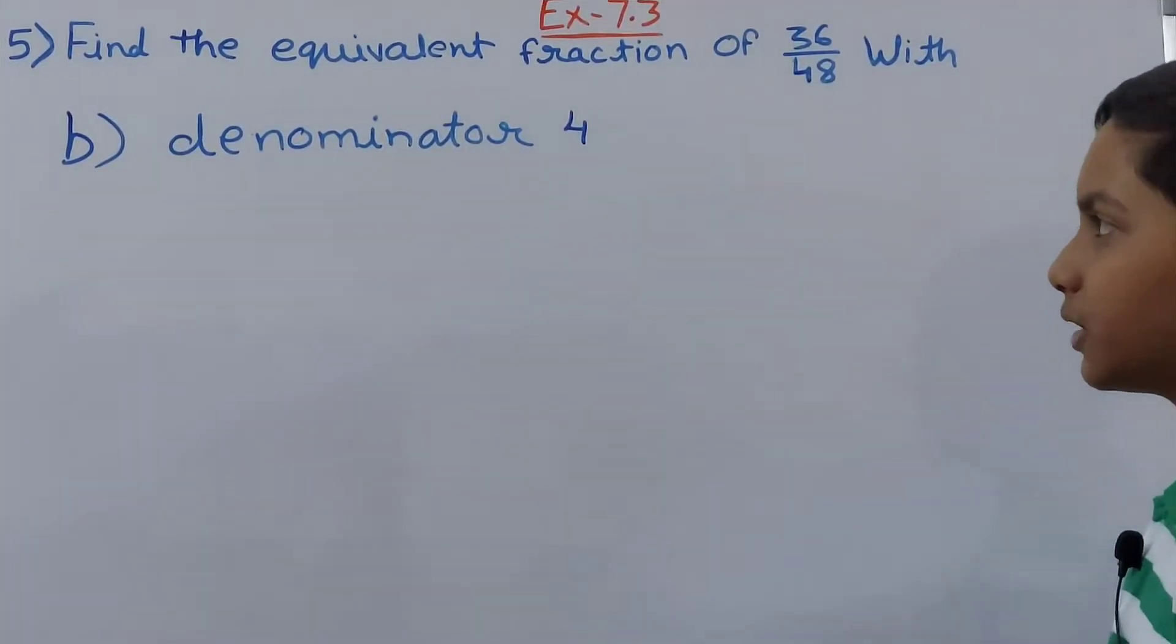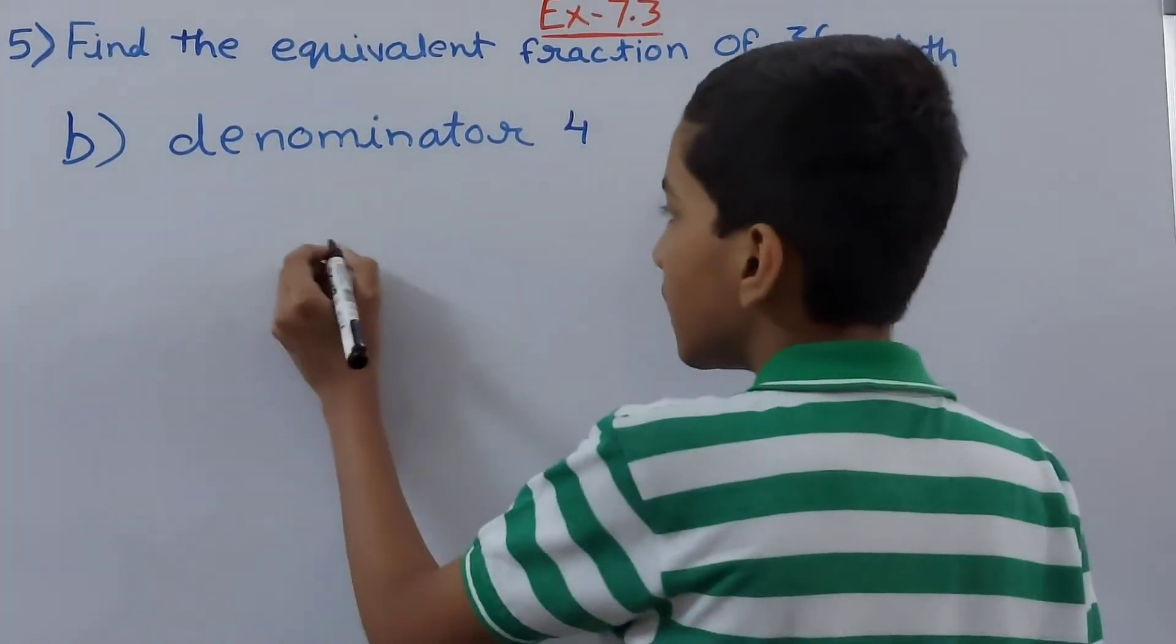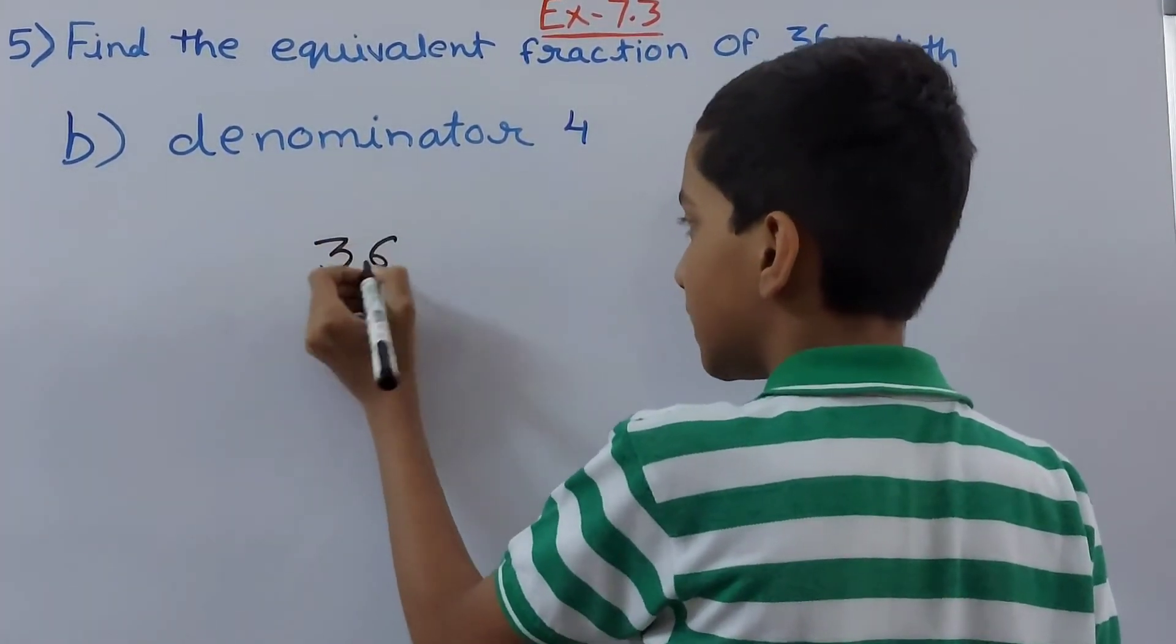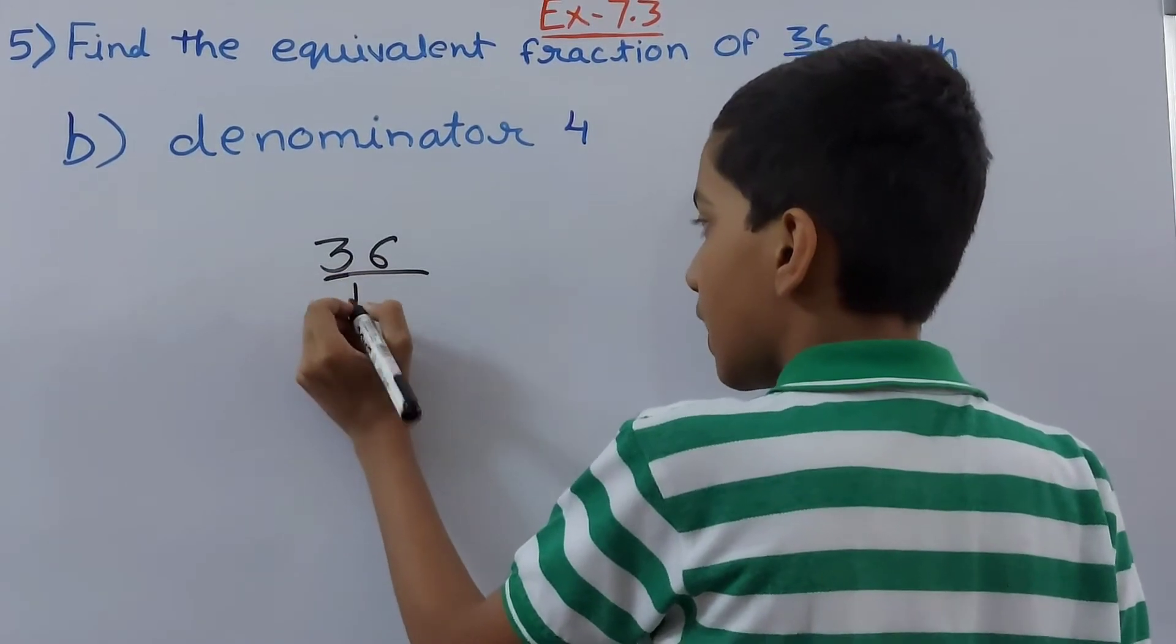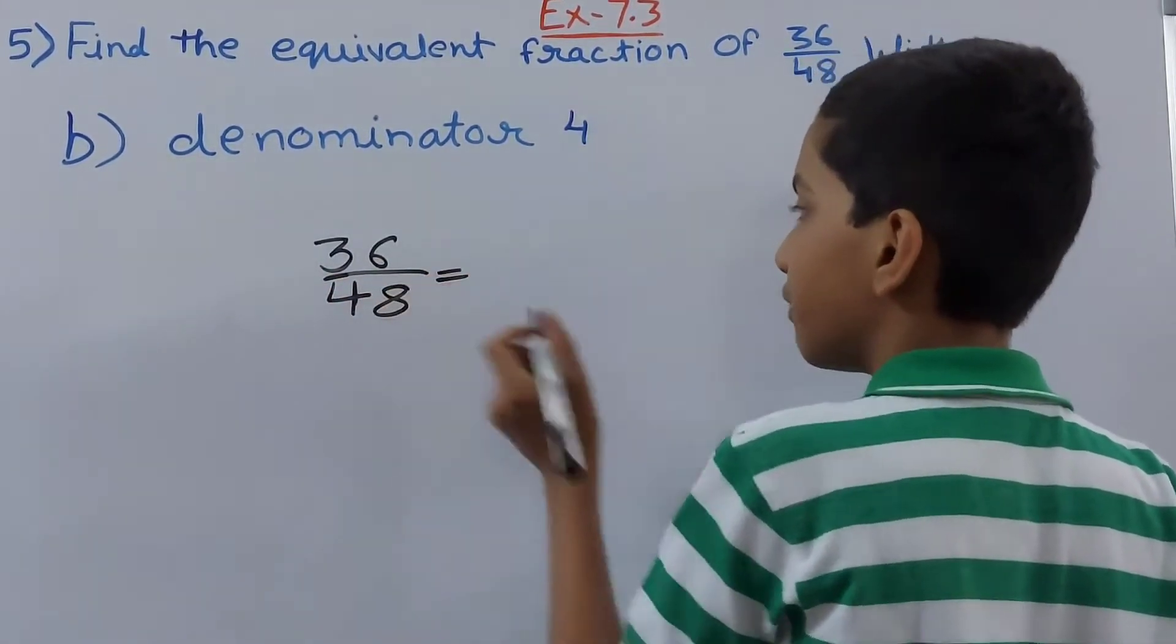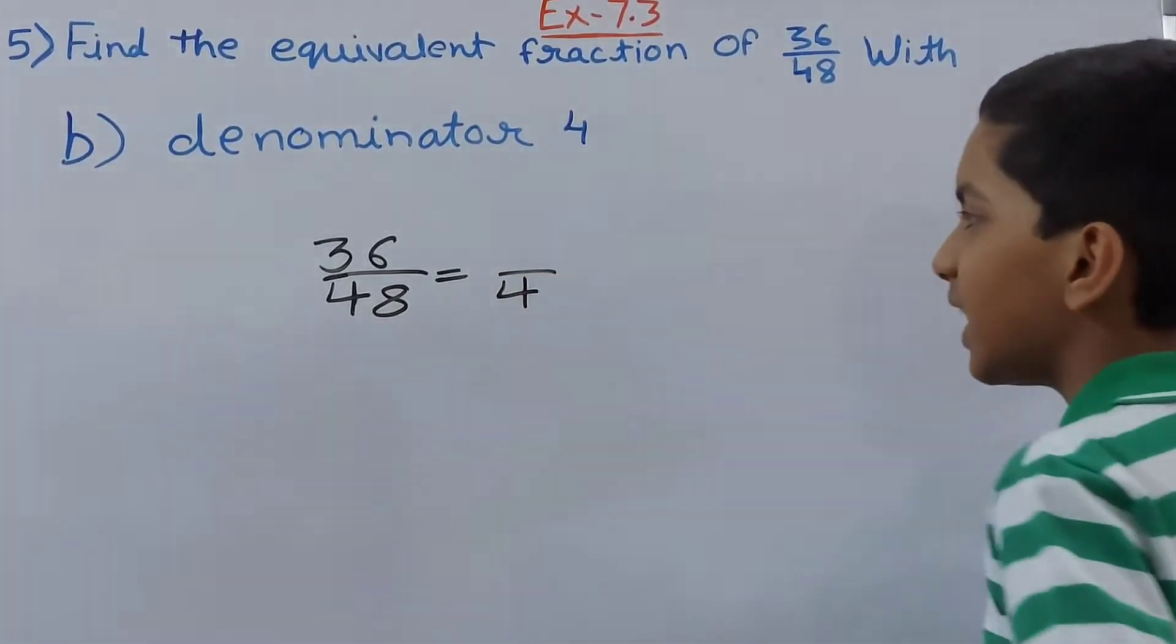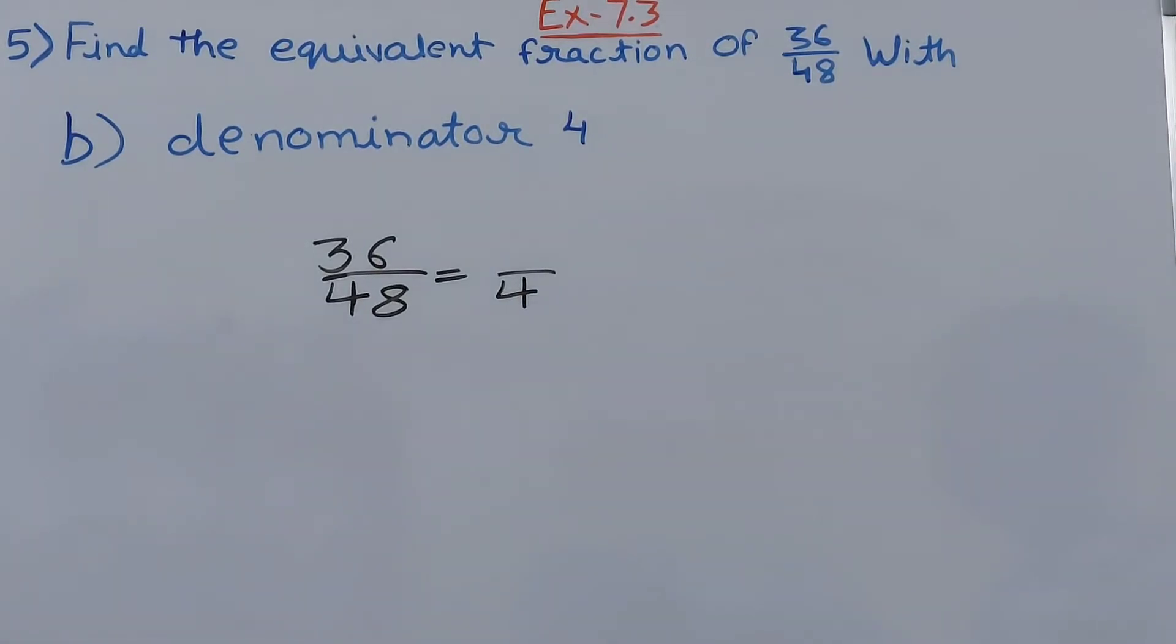Let us move on to the next part. This is part B, denominator 4. Again the fraction here we have is 36 upon 48 and we need to make an equivalent fraction out of it having 4 in the denominator.